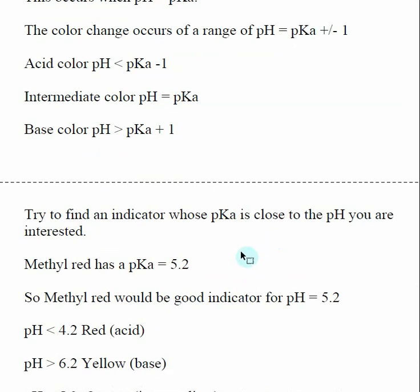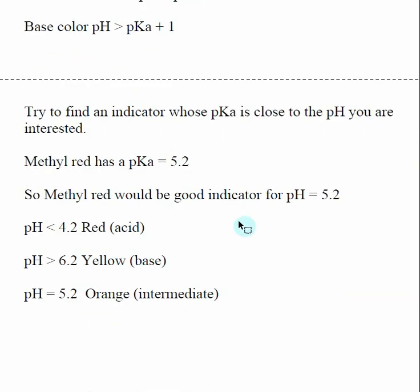If you want to use an indicator to know when a particular solution has reached a certain pH, you need to pick an indicator whose pKa is close to the pH that you want. A typical indicator is methyl red, which has a pKa of 5.2, so methyl red would be a good indicator if we are trying to titrate a solution to a pH of about 5.2.